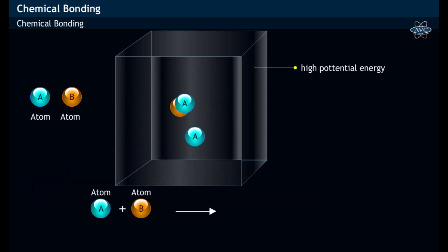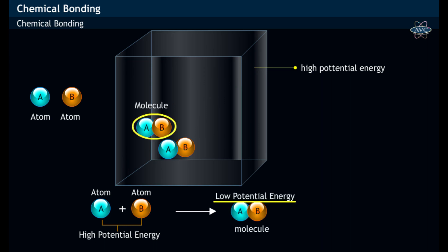Thus, atoms, in order to reduce their potential energy, combine with each other and form molecules like hydrogen, chlorine, etc.